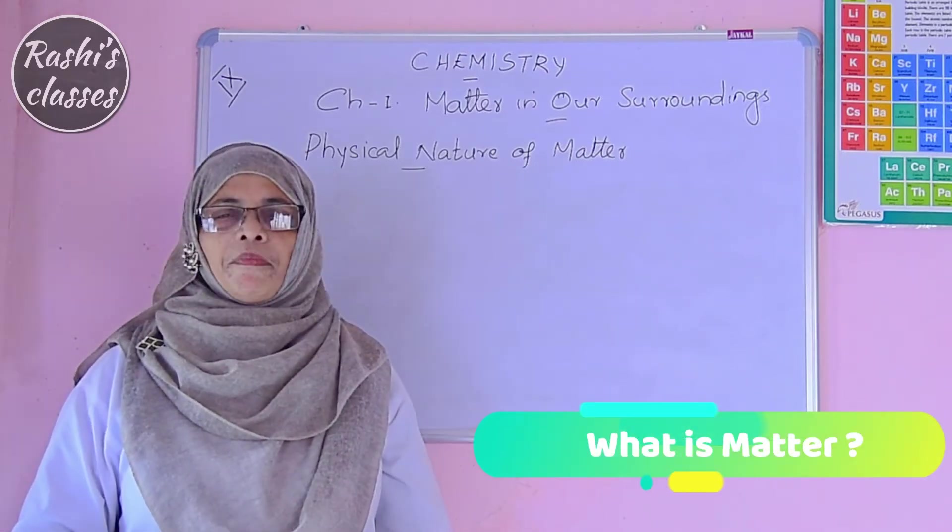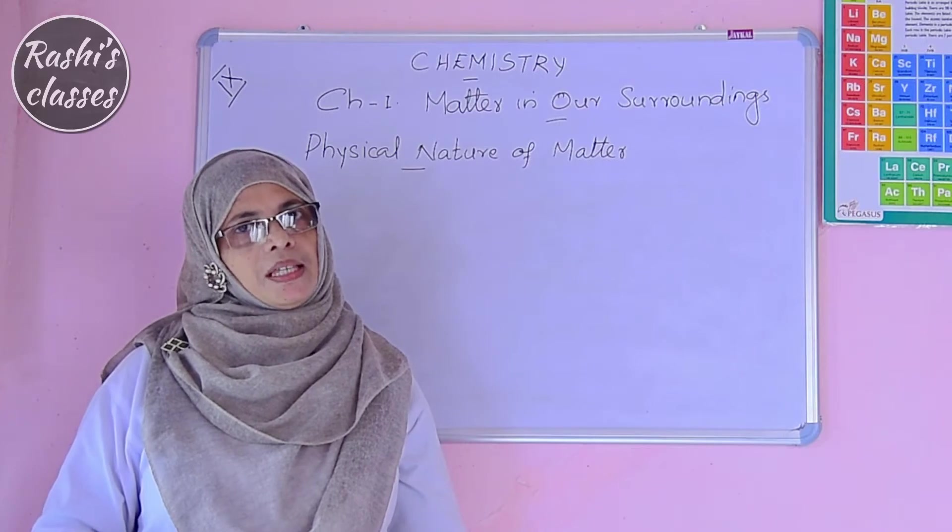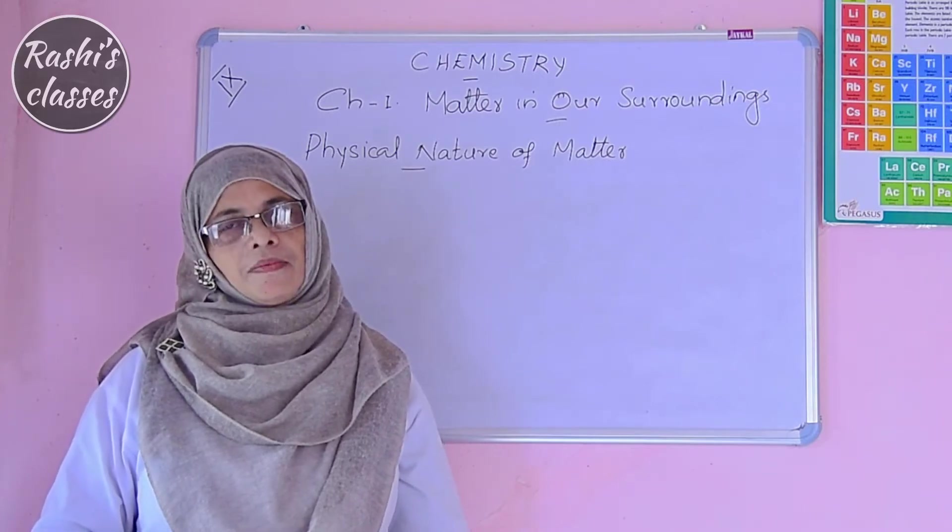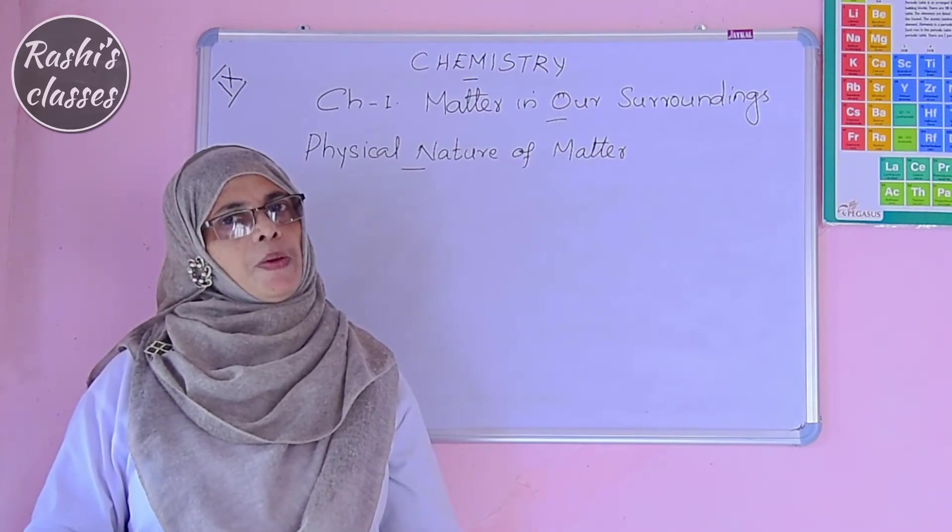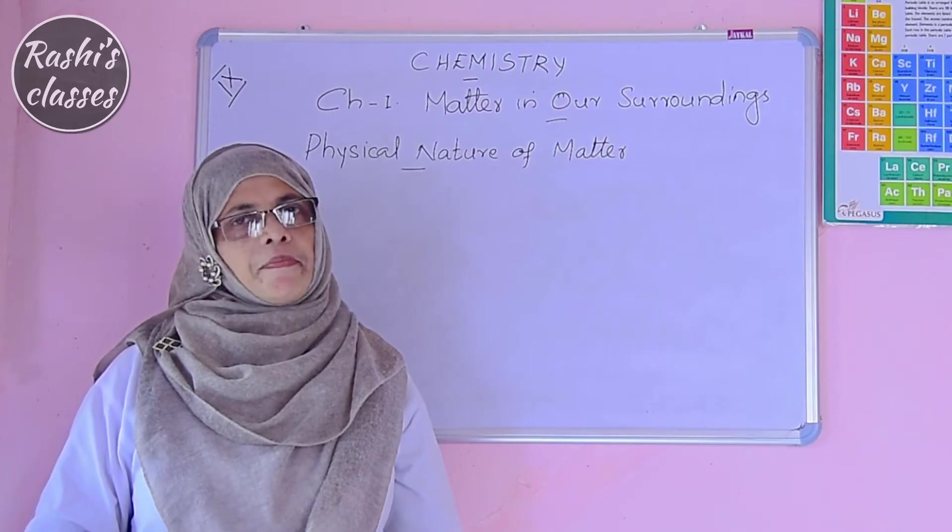What is matter? Matter is something that occupies space and has mass. Any object that occupies space and has mass is called matter.